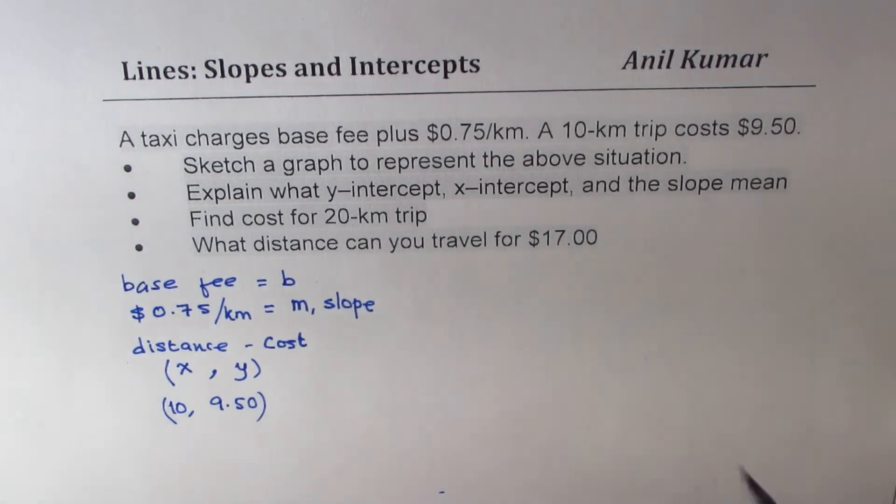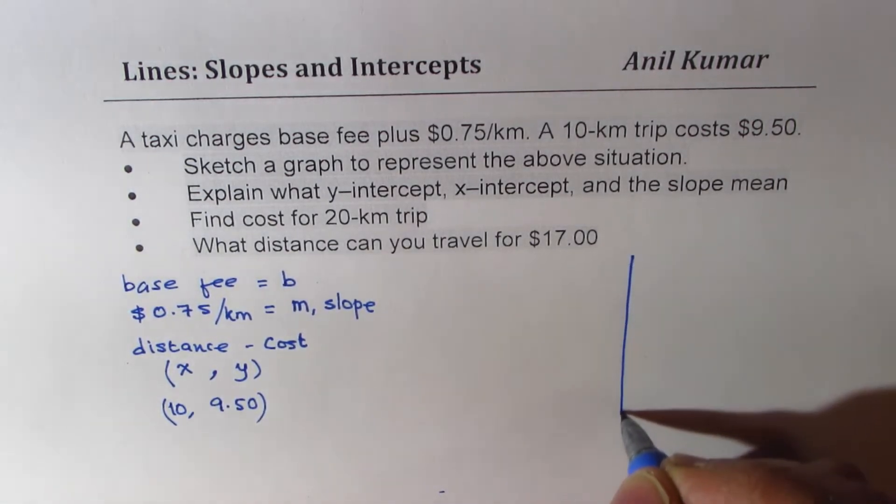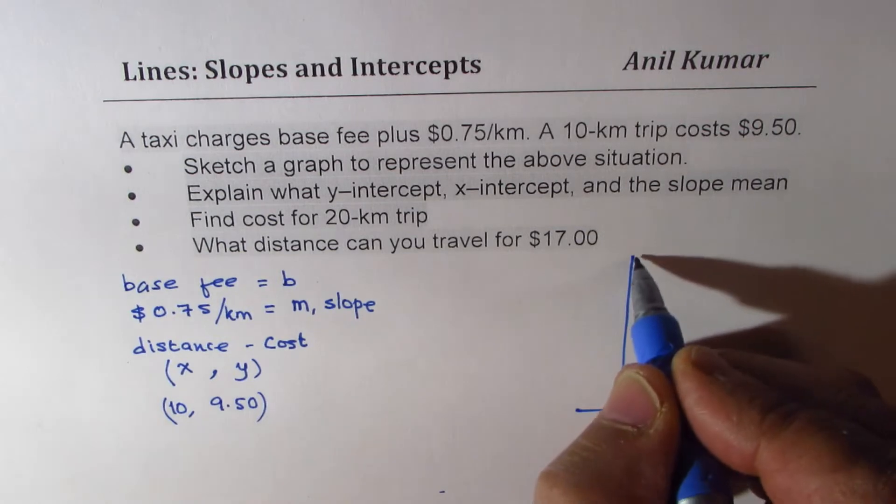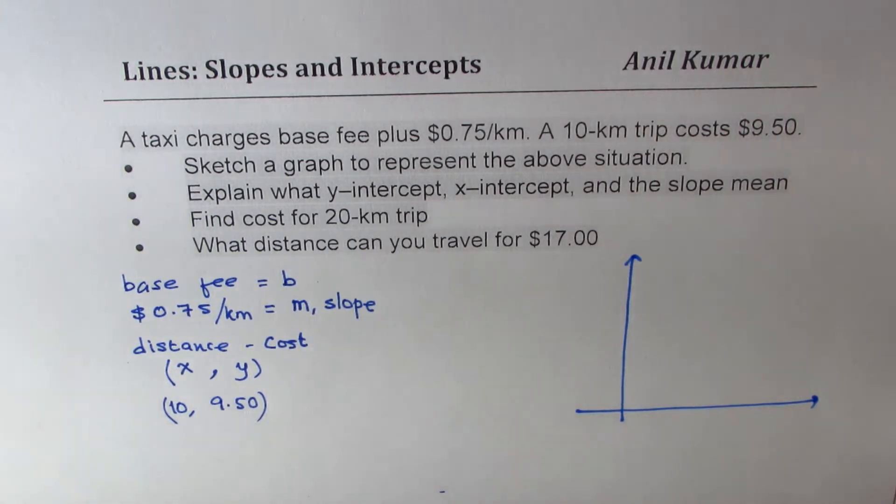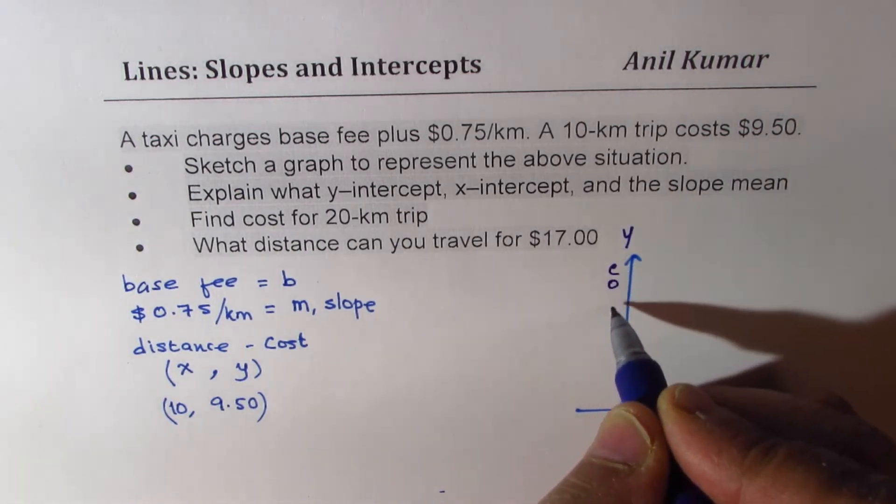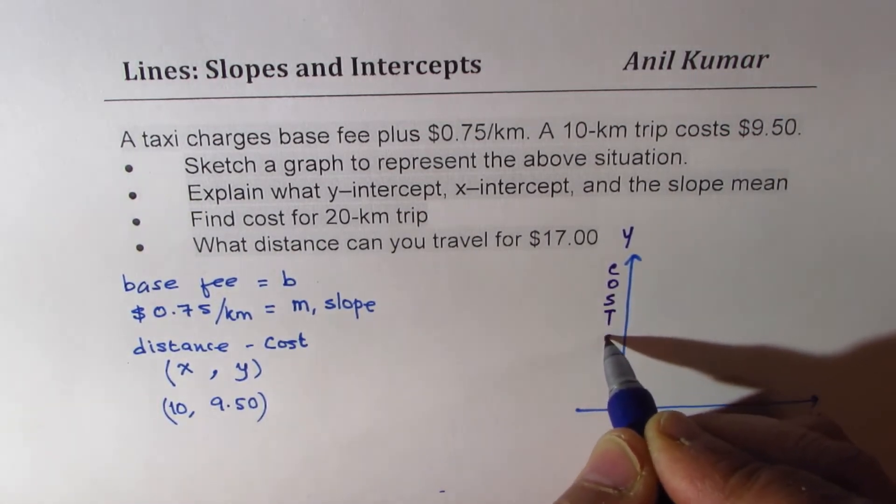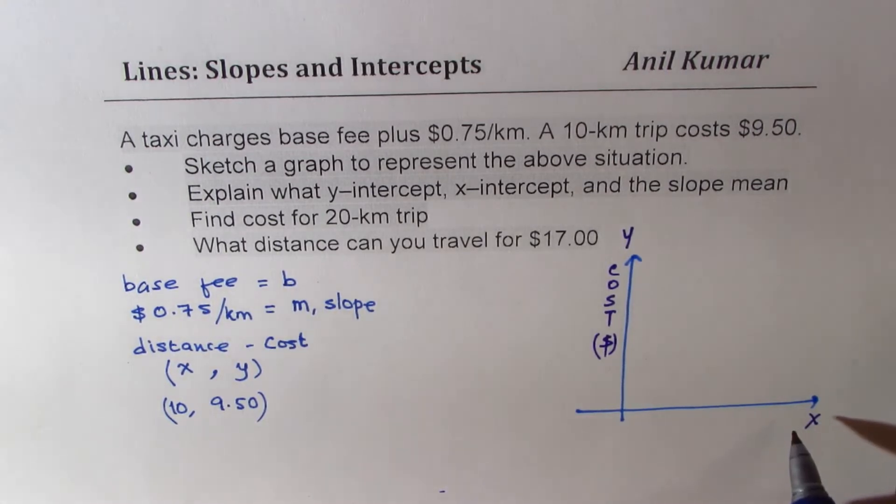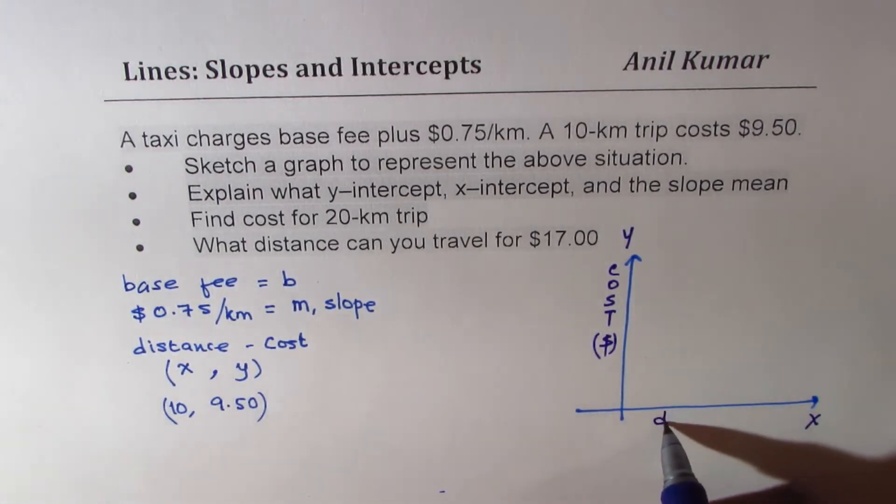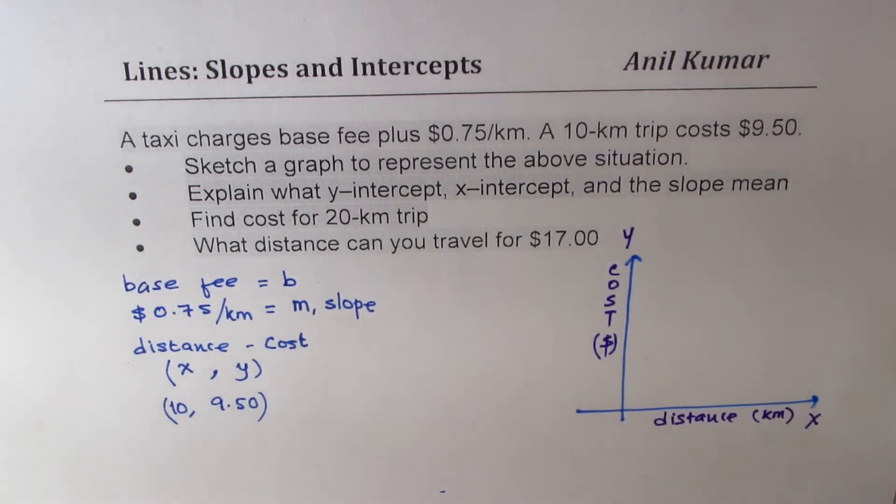Now, when we sketch a graph, we know it is always in quadrant 1, since both values are positive - distances are positive, and cost being paid is also positive. So we have this y-axis here, x-axis. Along the y-axis, we'll have cost in dollars, and along the x-axis, we have distance in kilometers.